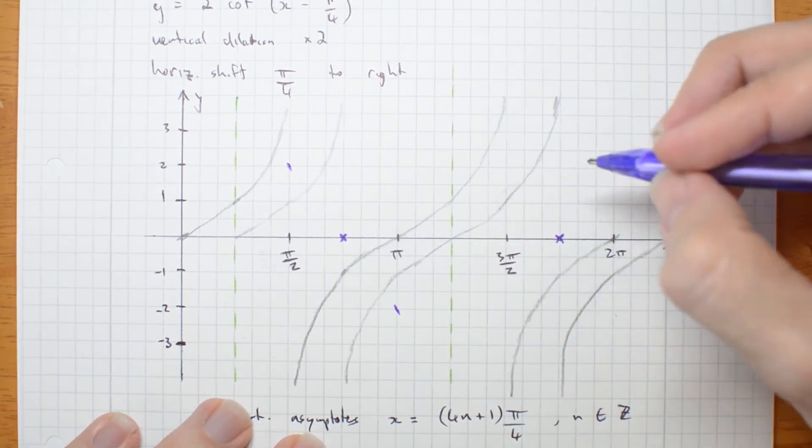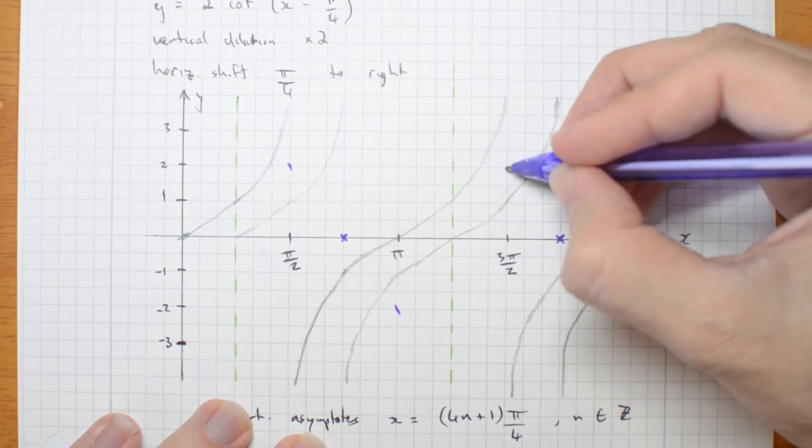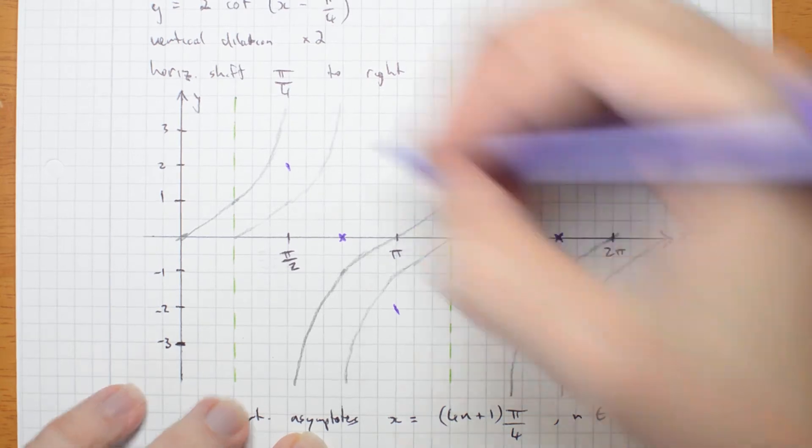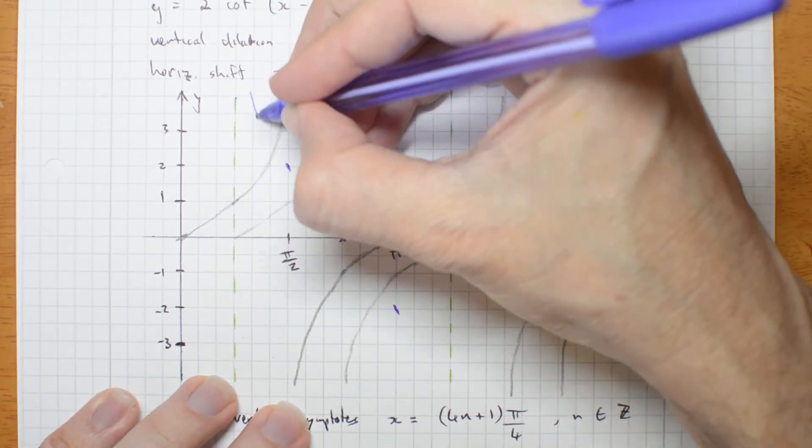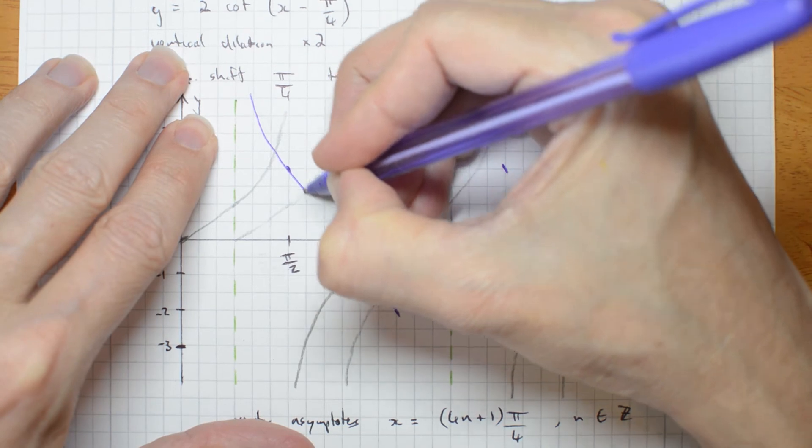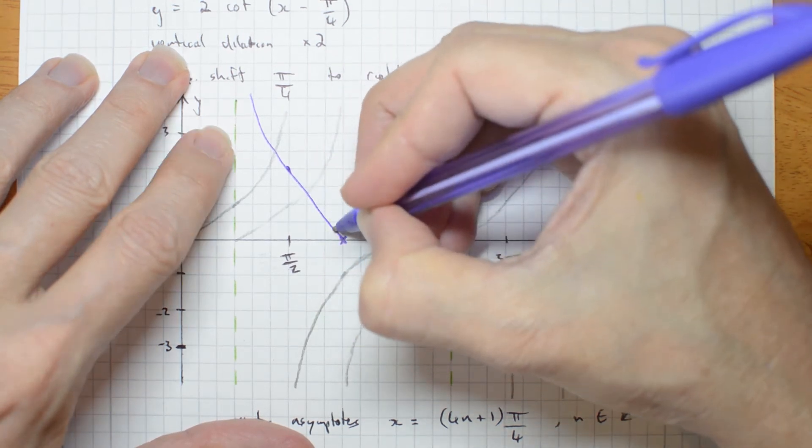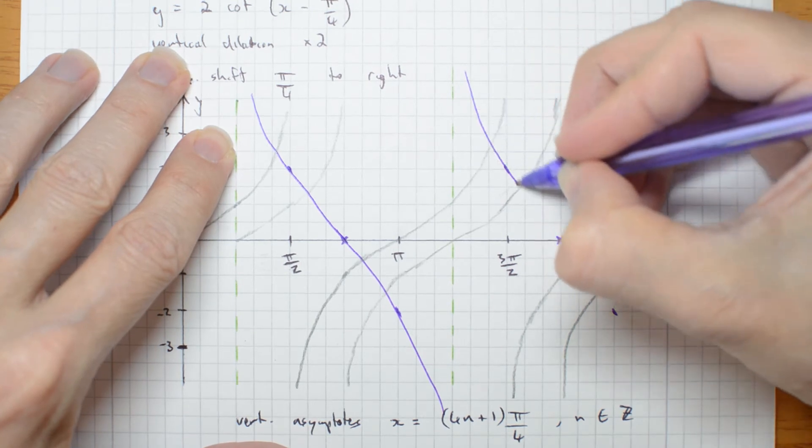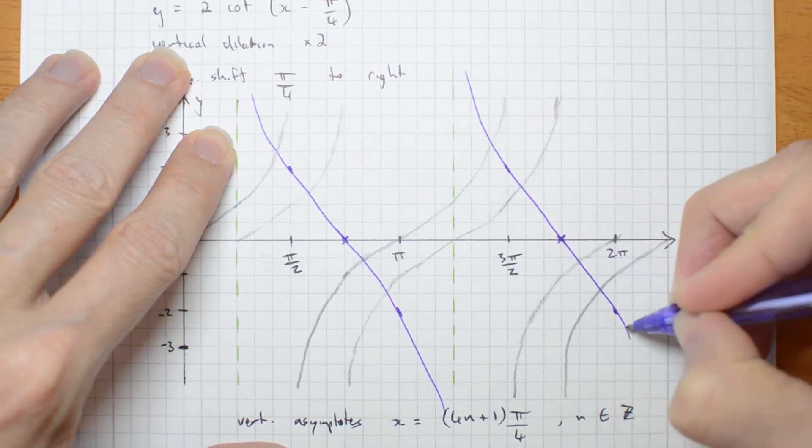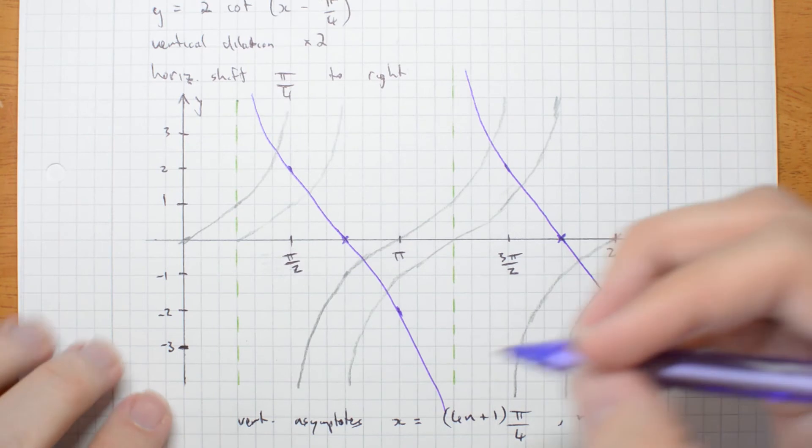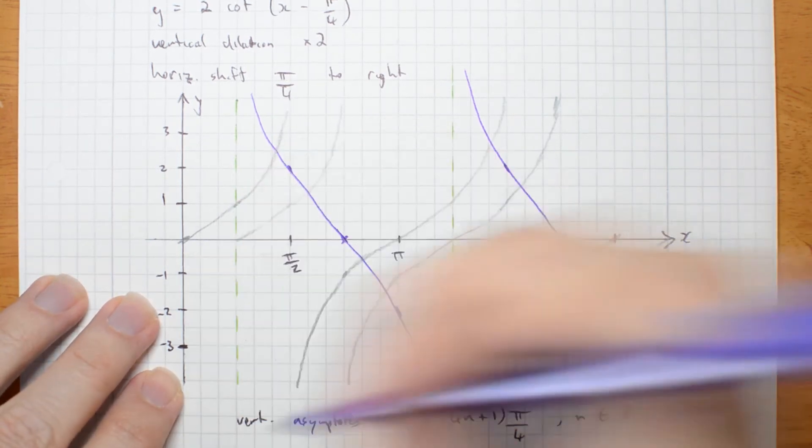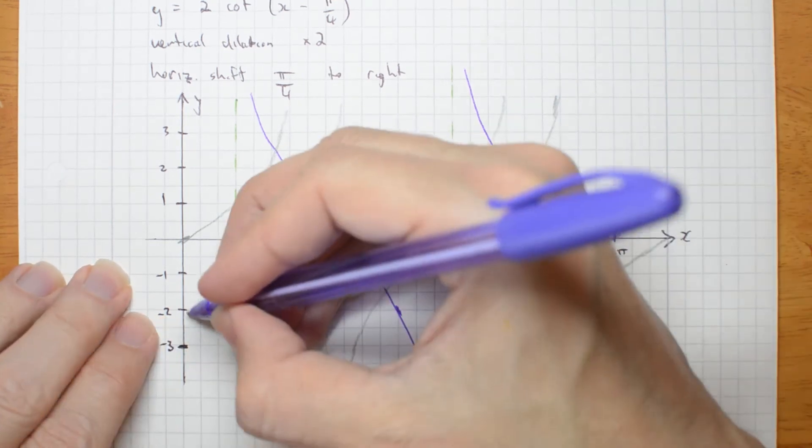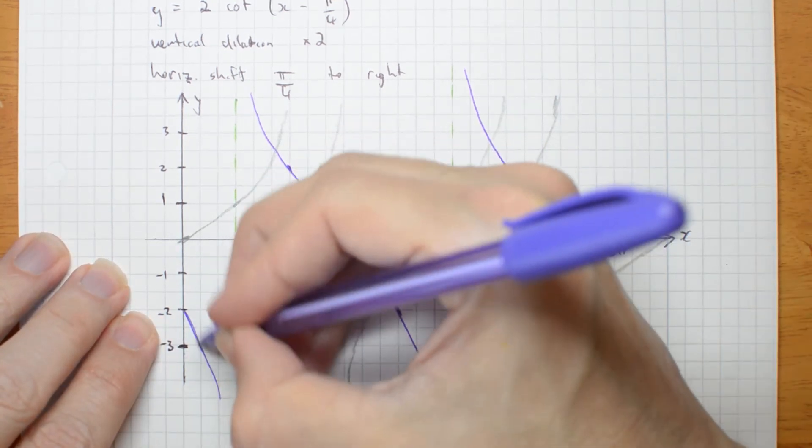Where it would have been at 1, it's now at 2. Where it would have been at 1, it's now at 2. And that should be enough for me to sketch in my cot. And actually I need to put in just a little bit more. I need to finish this. Over here. It's coming from 2. Like that.